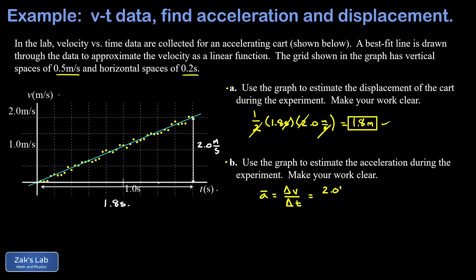The vertical change over the horizontal change - we've already written these into the graph. That's 2.0 meters per second for the change in velocity, we went from 0 to 2, and 1.8 seconds for the change in time, we went from a time of 0 to a time of 1.8.